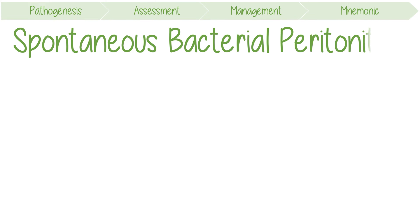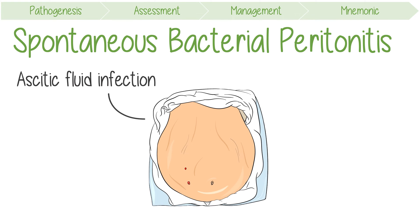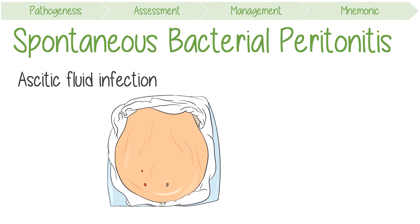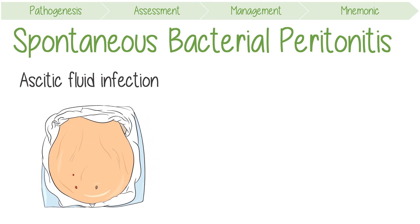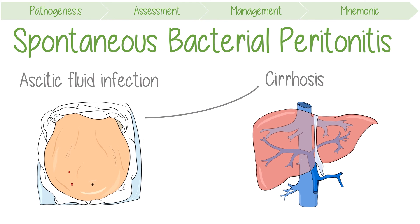Spontaneous bacterial peritonitis (SBP) is defined as an ascitic fluid infection without an evident source. It's one of the most common bacterial infections in patients with cirrhosis and has a poor prognosis if it's missed.